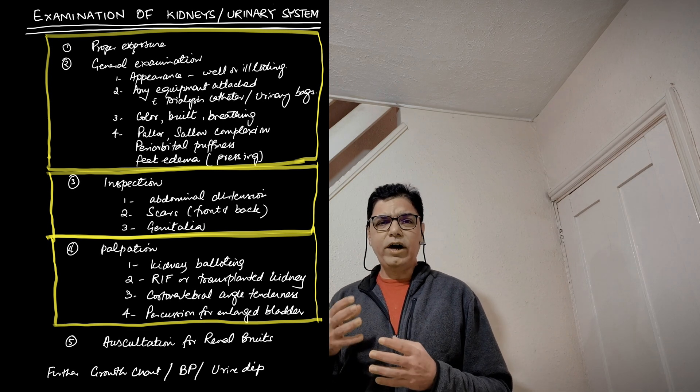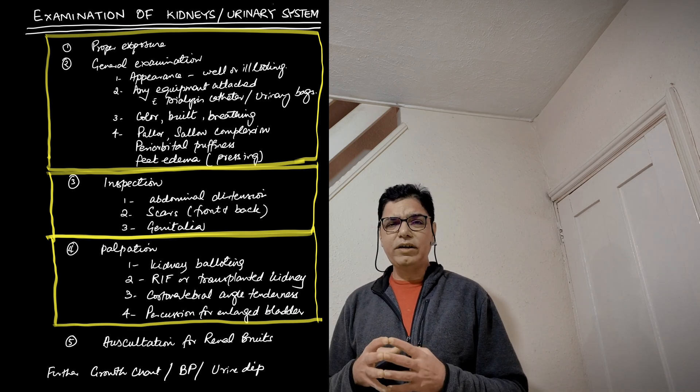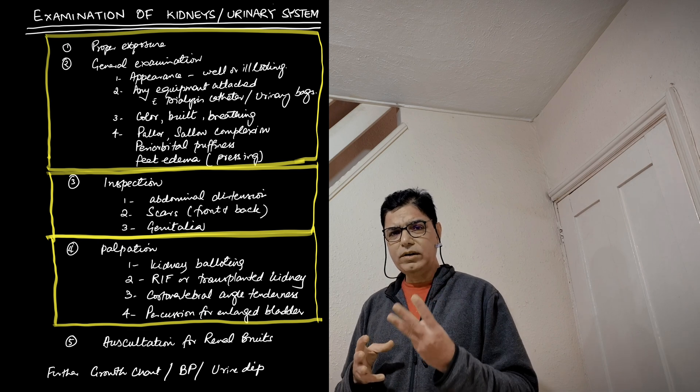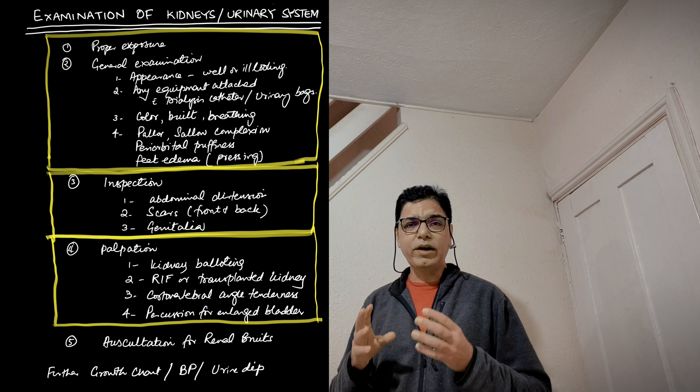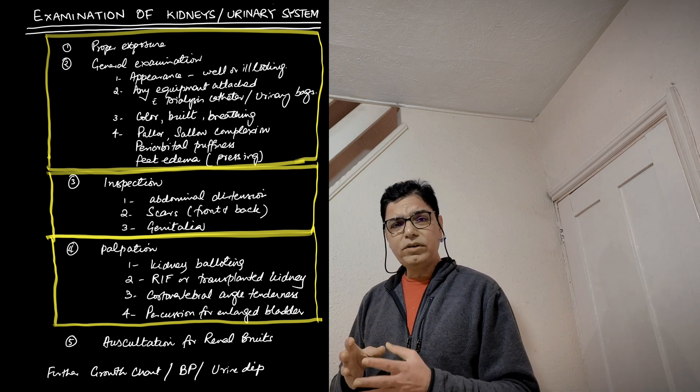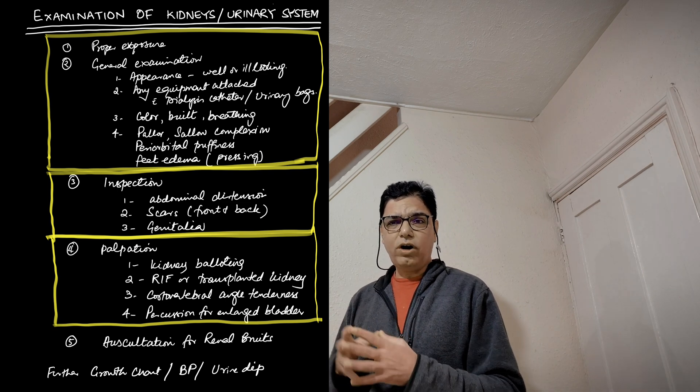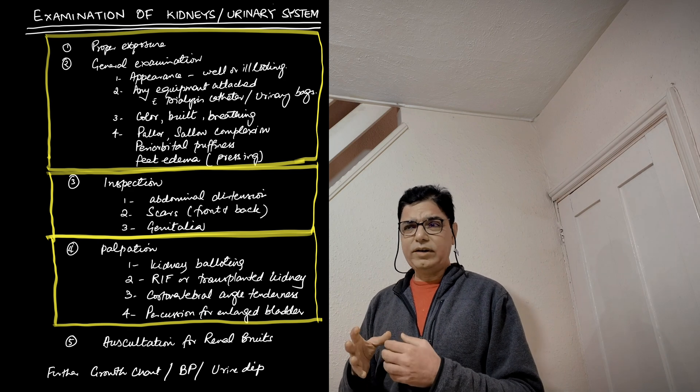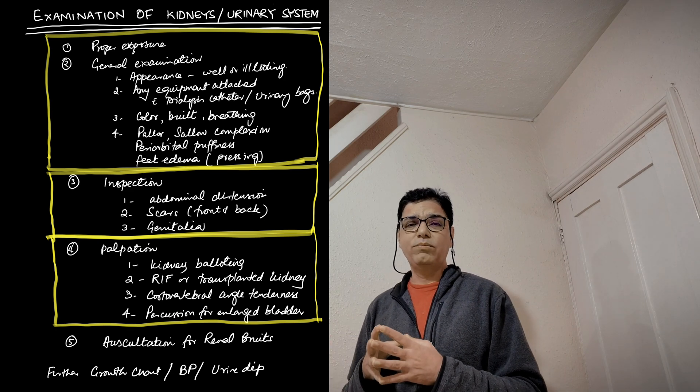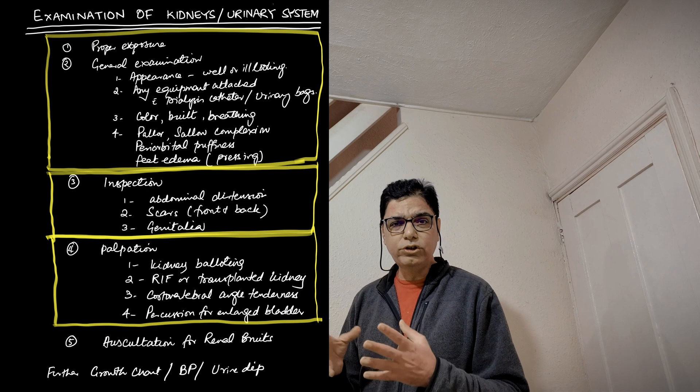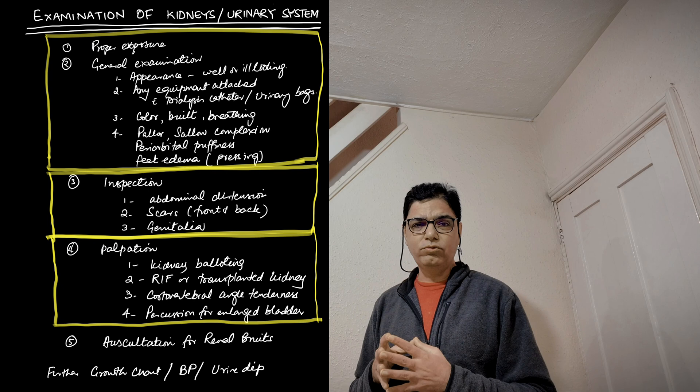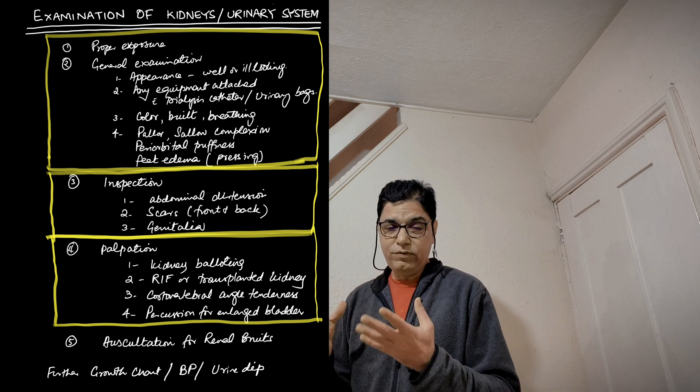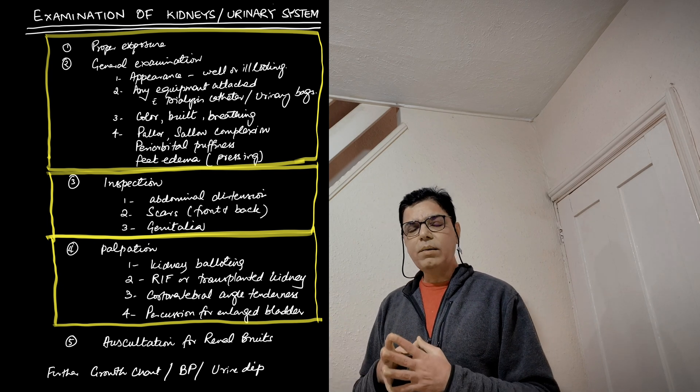In that particular case, remember three things. In all cases in which you have done the urinary system examination, say you would like to further plot the growth of the child on a growth chart because most of these kids who have got chronic renal problem might have some form of growth issues, especially growth stunting. Therefore, it's important that you plot them on a growth chart to see what is the degree of stunting, if any, is present.